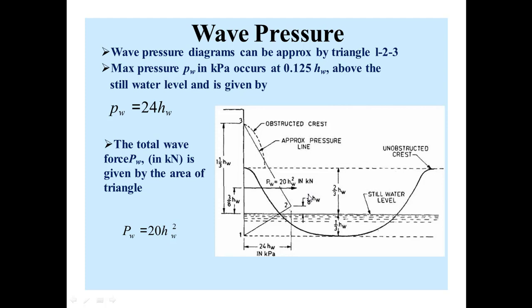and is given by Pw = 24Hw. So, this is the maximum pressure that occurs at the height of 0.125Hw. This is the height 0.125 or 3/8 Hw from the still water level, and this is equal to 24Hw.